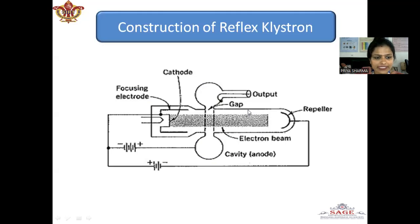How this works? Basically, it consists of electron gun, a filament surrounded by the cathode. This is the filament which is surrounded by a cathode focusing electrode at the cathode potential.